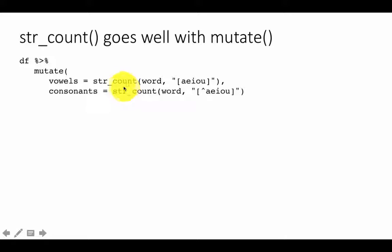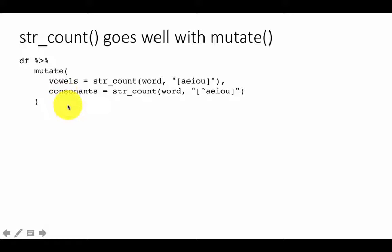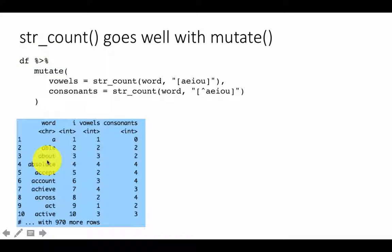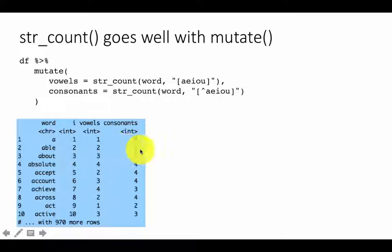`str_count` finds how many times the pattern matches the string. The result of this `mutate` will contain all prior columns plus two new ones: `vowels` and `consonants`. If you assign it back to `df`, those two columns are added permanently. You can see the word, its position index `i`, how many vowels, how many consonants — for example, 'able' has length 4: two vowels and two consonants, and so on.